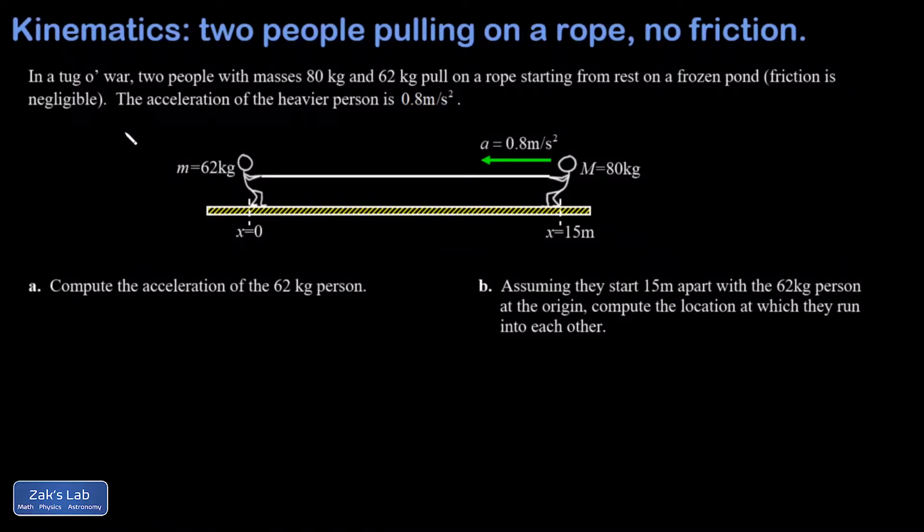In this problem, two people are having a tug-of-war on a frozen pond, and the whole point of that is that we can ignore friction. One person has a mass of 80 kilograms, the other 62, and they're starting from rest. We observe that the acceleration of the heavier person is 0.8 meters per second squared.